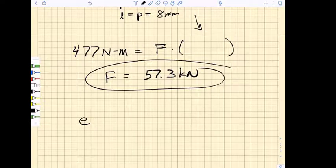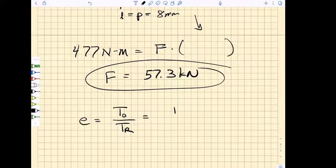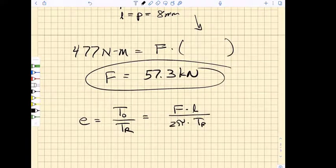The next thing we have to do is find the efficiency of this particular power screw, where we take the torque with no friction and divide it by the raising torque with both thread and collar friction. It turns out that this reduces to the force that we apply times the lead divided by 2π times the raising torque.